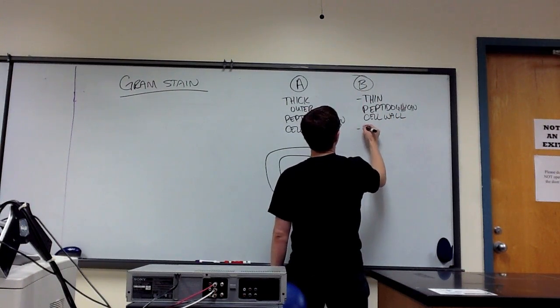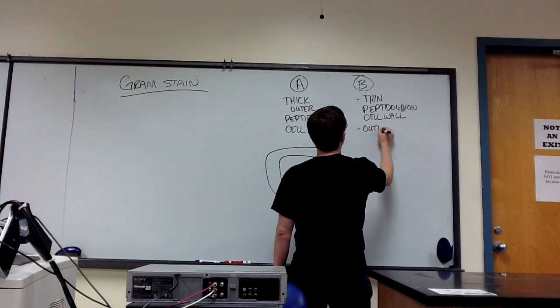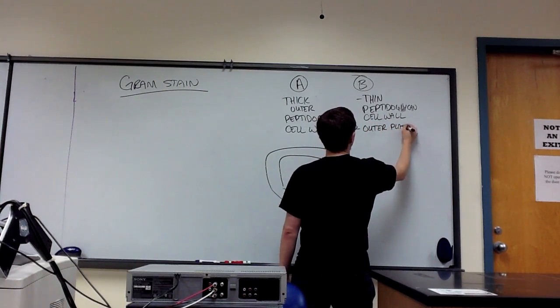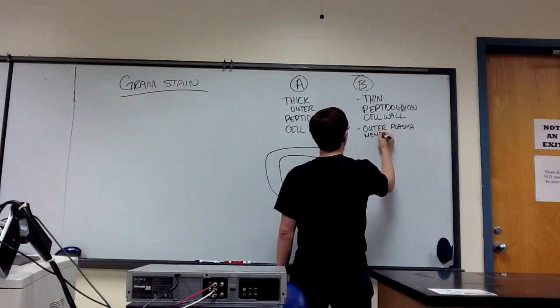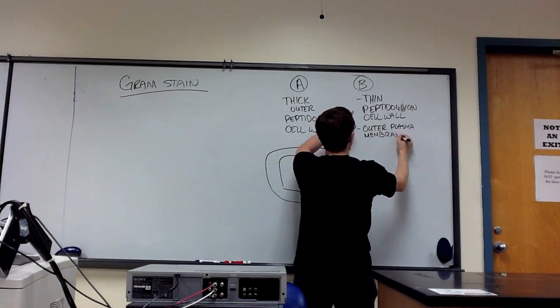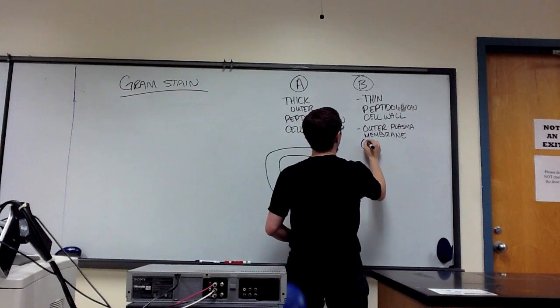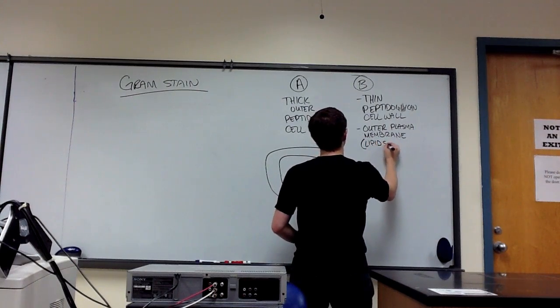And then it's going to have an outer plasma membrane that's outside of the cell wall. It's composed primarily out of lipids and carbs.